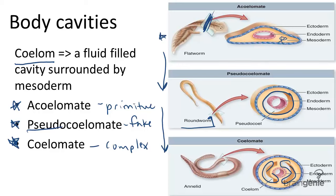Remember that only triploblastic animals — animals with three germ layers — can possess a body cavity, but not all do. The presence of a coelom helps scientists classify organisms and better understand their relatedness to other organisms.